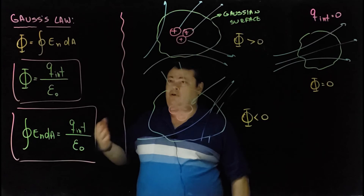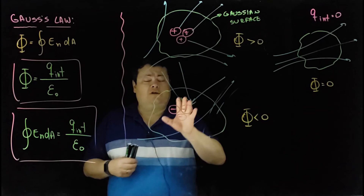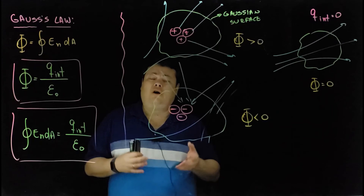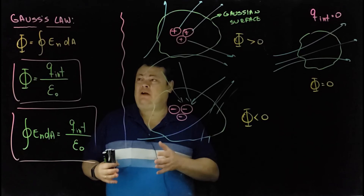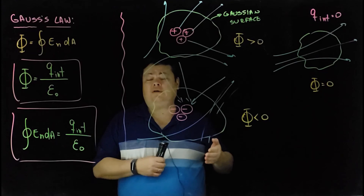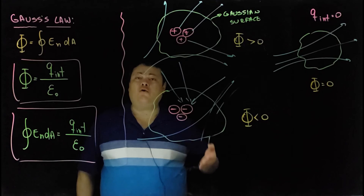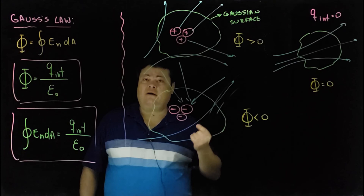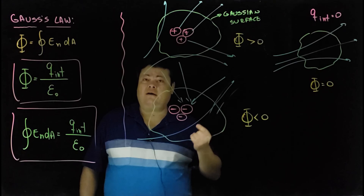In practice, we don't draw arbitrary Gaussian surfaces. These are geometrical constructions chosen to help us calculate the electric field. There is a technique where we draw conveniently shaped Gaussian surfaces to simplify calculations. That technique will be explained in the second portion of this lecture, where we'll calculate the electric field created by a point charge, a uniformly charged sphere, a plane of charge, and a line of charge. Watch the next video.